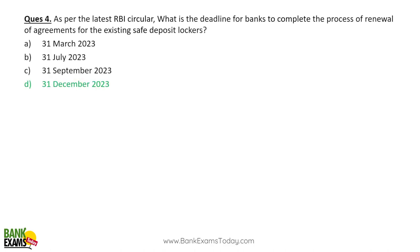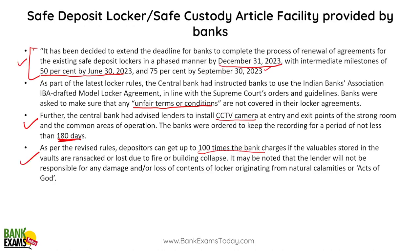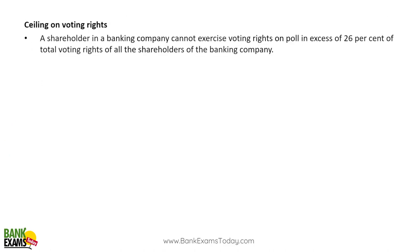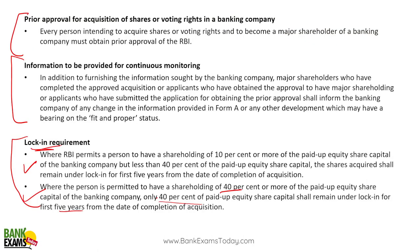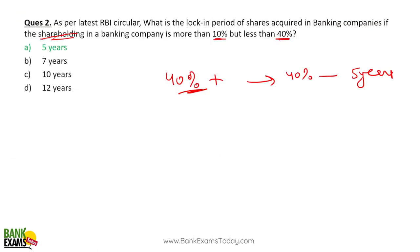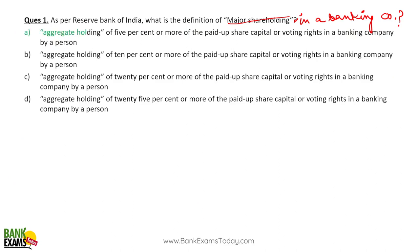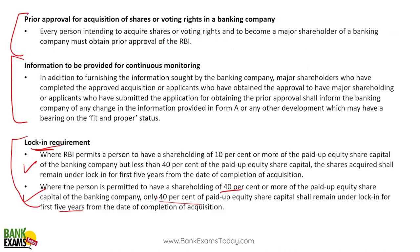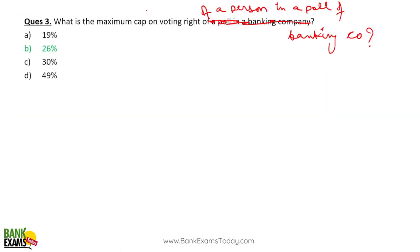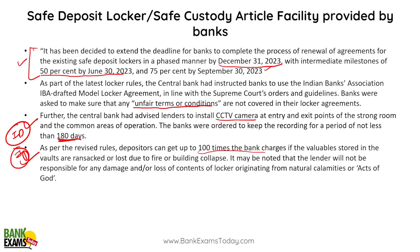As per the RBI guideline, the locker agreements should be renewed by 31st December 2023. The CCTV recording requirement of 180 days and the 100 times bank charges liability are important pointers. To summarize the important topics: ceiling on voting rights, lock-in period, definition of major shareholding, the locker renewal deadline — these are four to five really important questions from this month's RBI circulars.